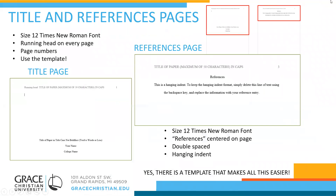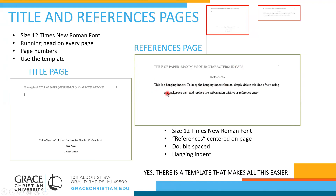One thing you need in an APA paper is a title and reference page. Make sure everything is in size 12 Times New Roman font. The running head goes on every page, and the page numbers are in the upper right-hand corner. Using the template makes it easier if you're not sure how to do all of this in Microsoft Word, because it is a lot of details. The references page is the same way — the running head stays on every page and the page number changes automatically.